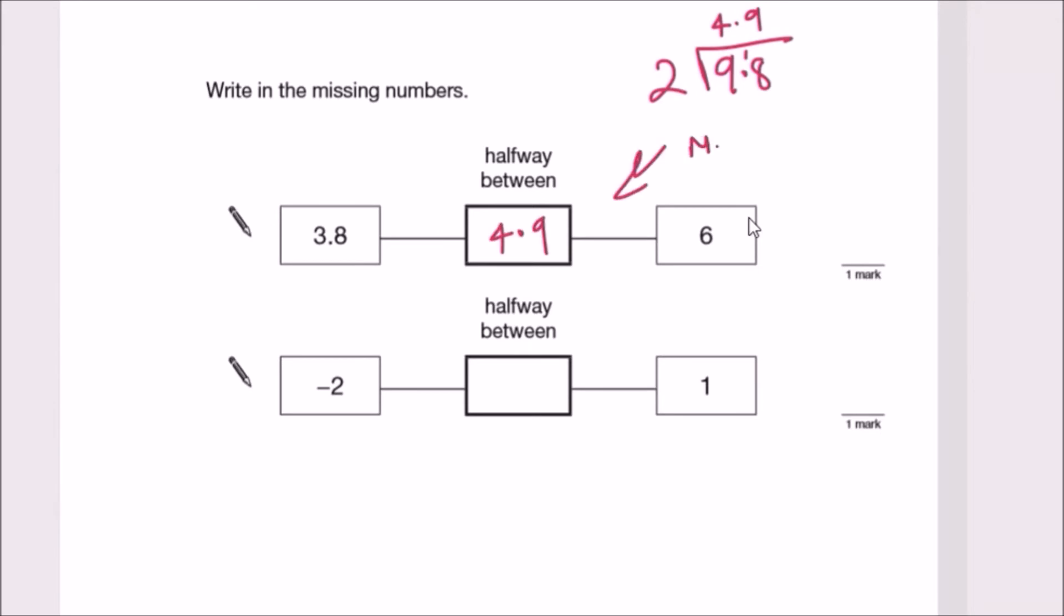So again, it's like calculating the mean of two digits. Now, the next one: -2 and 1. Firstly, adding these two up, so -2 plus 1 should give us -1, and then halving it by dividing by 2. Well, you can leave it like this: -1/2 or -0.5. Both of these work.